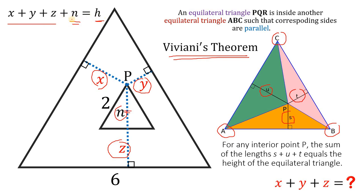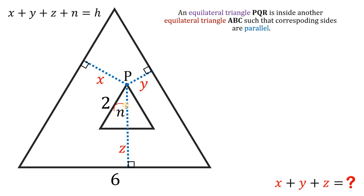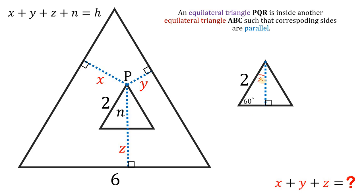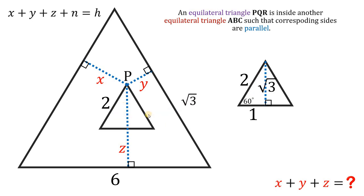Now what we're going to do is to find out what is the value of N and what is the value of H. Let's start first by solving the value of N. Let's draw the height of this equilateral triangle like this. Take note this angle right here must be equal to 60 degrees. Using the concept of the 30-60-90 right triangle, because we know this angle right here is 30 degrees, the side opposite of 30 degrees must be equal to half of the hypotenuse, which is 1, and the side opposite to 60 degrees must be equal to 1 times the square root of 3, or simply square root of 3. And that is the value of N.